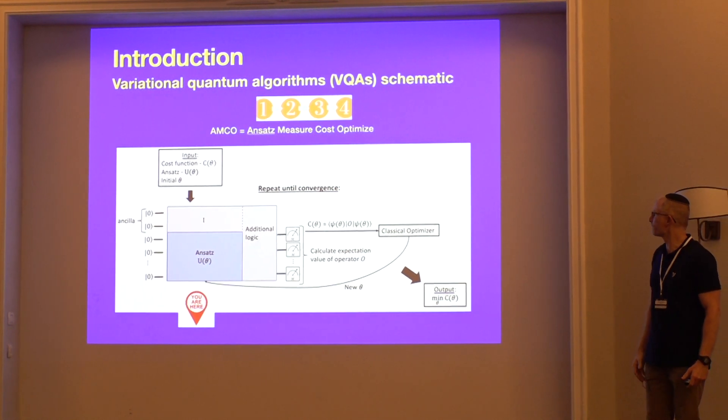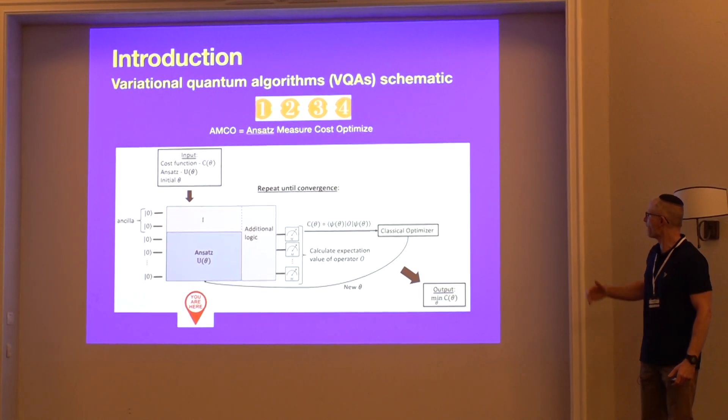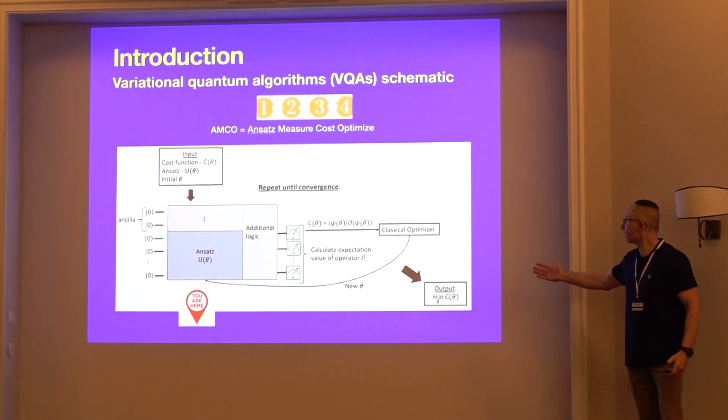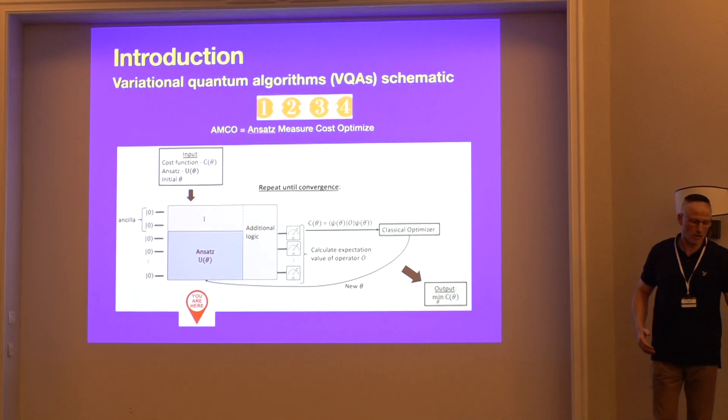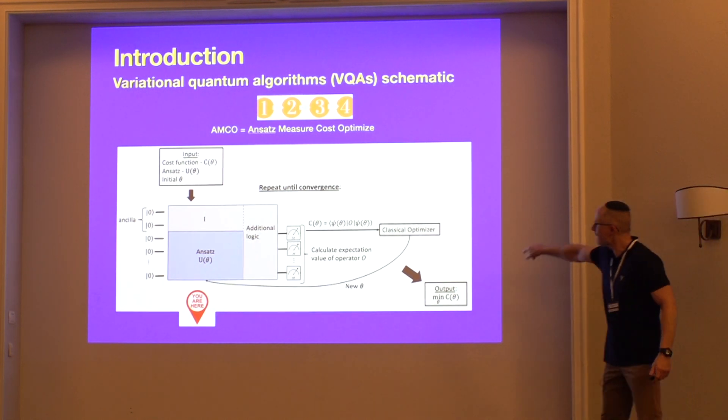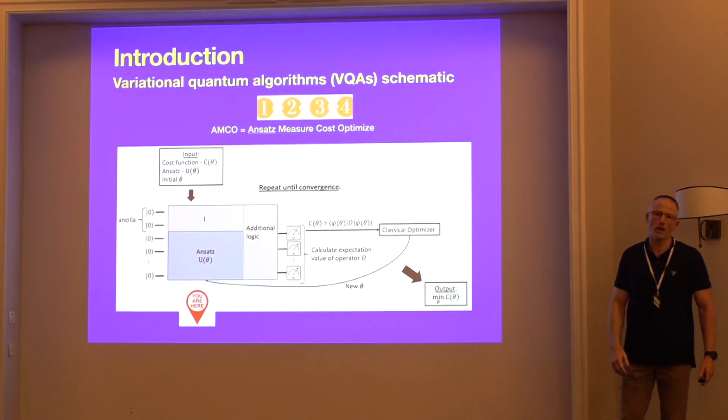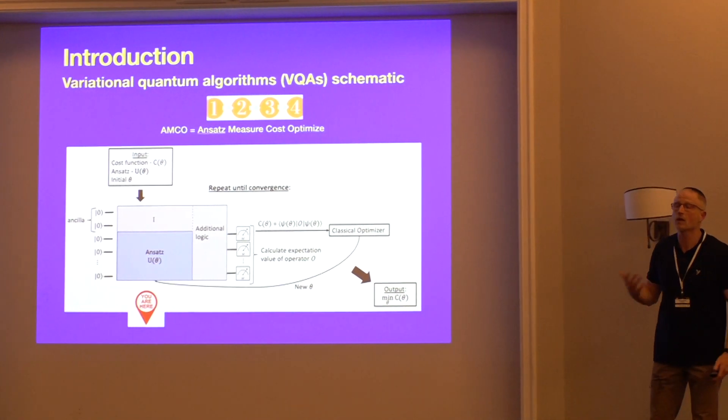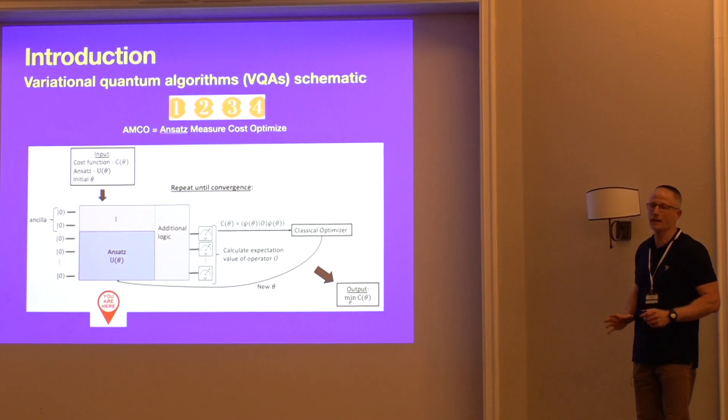The cost function is related to the problem that we're trying to solve. And then we try to minimize or optimize that cost function by a classical computer using something like gradient descent to update the parameter vector theta, then re-initialize the ansatz and repeat the calculation until convergence. So that's the general idea.